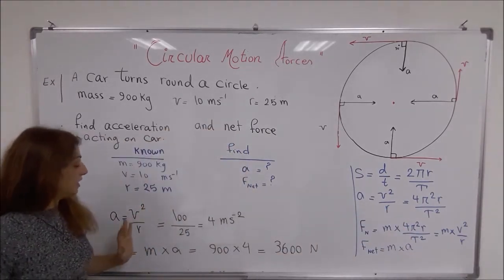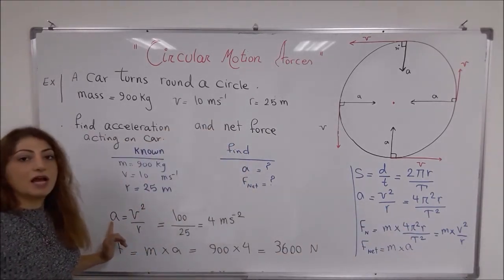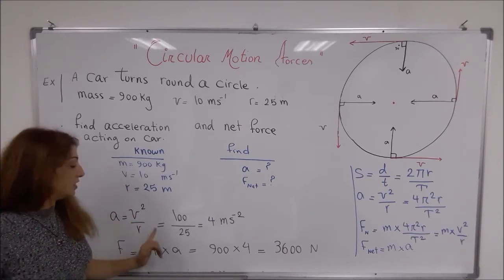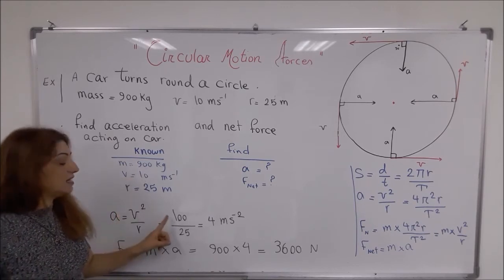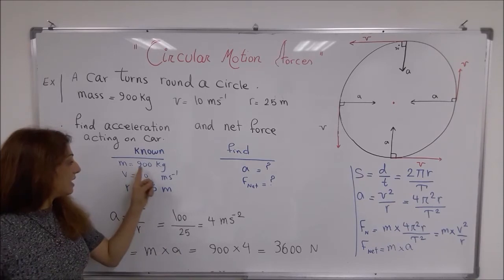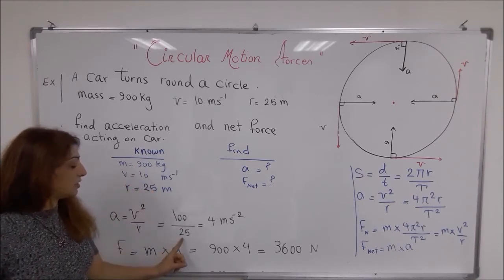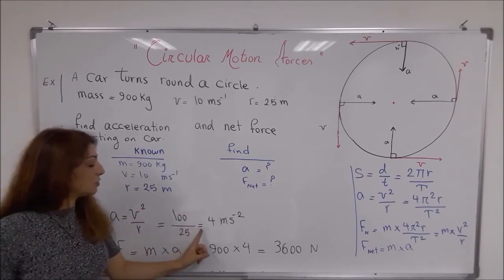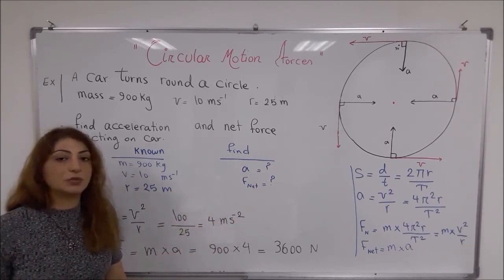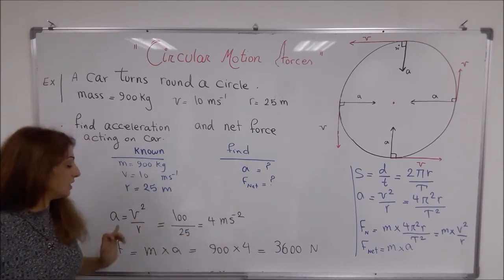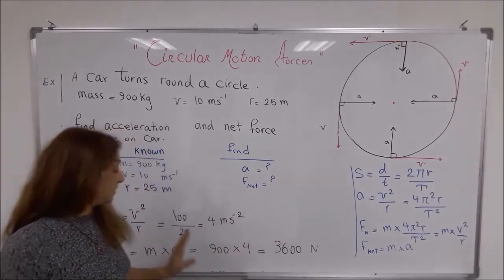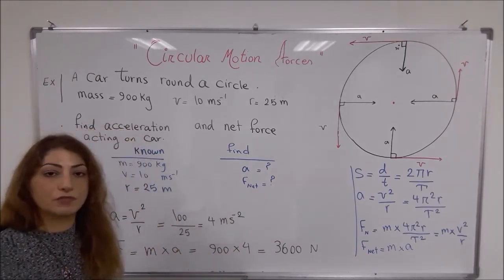I write: acceleration = v² / r = 10² / 25 = 100 / 25 = 4 m/s². That is the unit of acceleration.